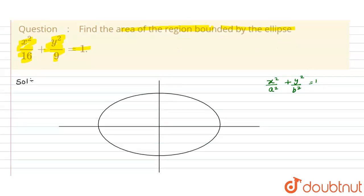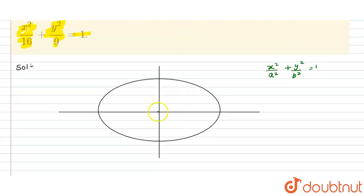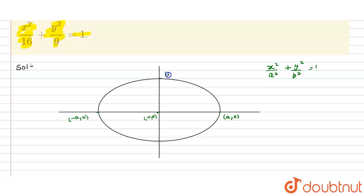In this ellipse, the origin is at (0, 0). On the x-axis we have the point (a, 0) and on the other side (−a, 0). On the y-axis we have the point (0, b) and on the other side (0, −b).